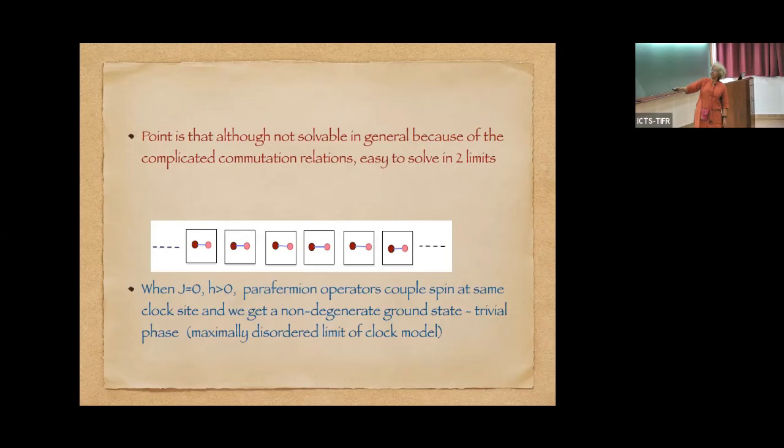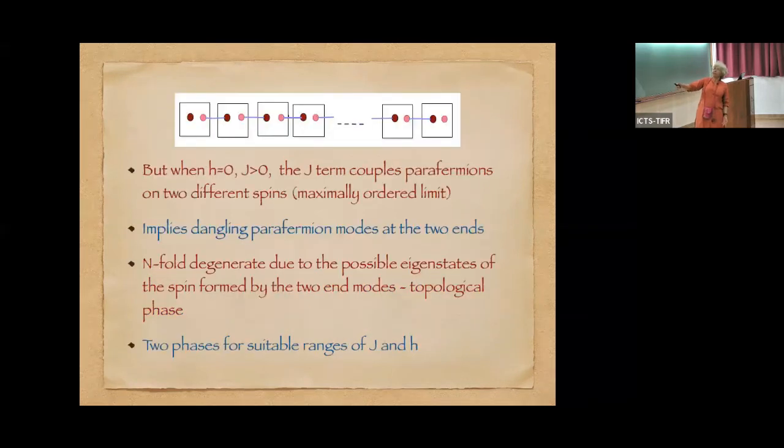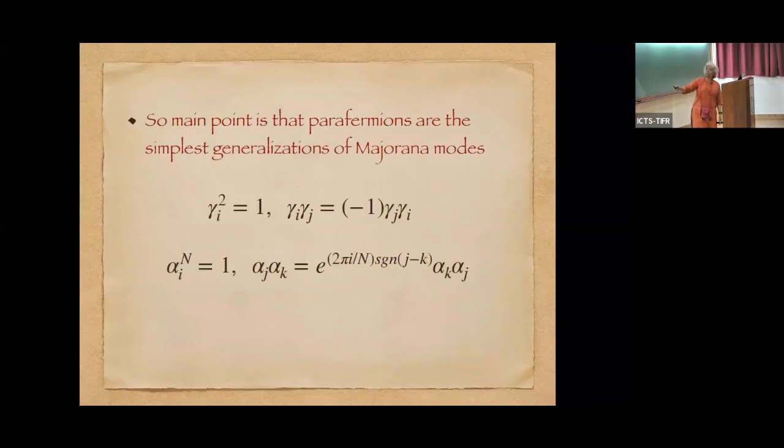And the point is that although this kind of model is not solvable in general, it is solvable in two limits. And just like for the Kitaev model, what you find is that when j is 0 and h is greater than 0, parafermion operators couple spin at the same clock site, and we can get a non-degenerate state. Or in the other extreme limit, you can get the two edge modes to be completely decoupled from the Hamiltonian. So you have dangling parafermion modes at the two ends. And because of that, you find an n-fold degenerate ground state, which is the possible eigenstates of the spin formed by these two. And it's not just for j is 0 or h is 0, you have two phases for suitable ranges. So the main point I want to emphasize is that parafermions are the simplest generalization of Majorana modes.